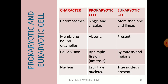Regarding chromosomes, in prokaryotes it is single and circular, whereas in eukaryotes there are more than one and they are linear. In prokaryotes, membrane-bound organelles are absent, whereas in eukaryotes membrane-bound organelles are present. Regarding cell division, in prokaryotes it is simple by fission, called amitosis, and in eukaryotes it is by mitosis and meiosis.